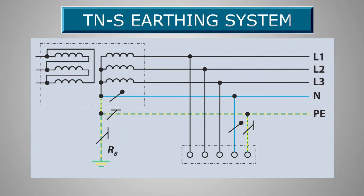TNS earthing systems: in this system, the ground conductor and neutral conductor are separate throughout the distribution system. The protective conductor is the metallic covering of the cable supplying the installation. All the exposed conductive parts of the installation are connected to this protective conductor, or via the main earthing terminal of the installation.